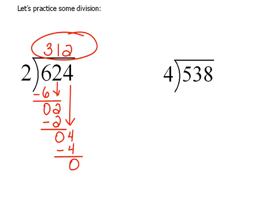Now, you could always check this very quickly by multiplying 312 times 2. Because division and multiplication are just backwards of each other. So, we could say 2 times 2 is 4. 2 times 1 is 2. And 2 times 3 is 6. So, we end up with that same dividend that we started with.